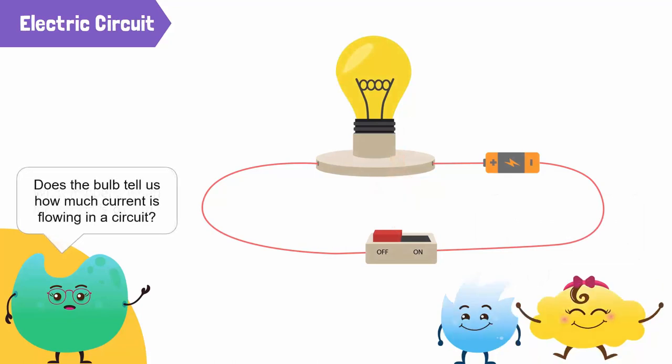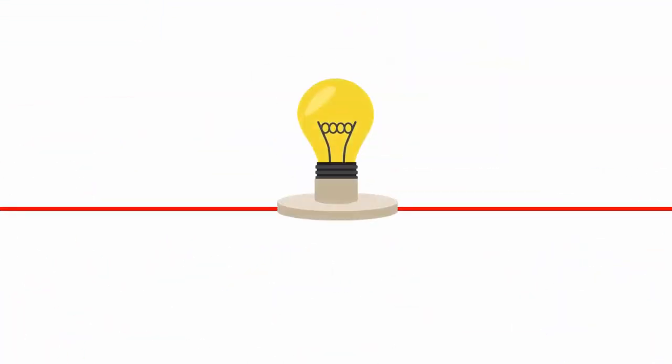But does the bulb tell us how much current is flowing in a circuit? A light bulb tells us that an electric current is flowing in a circuit, but it cannot show how much current is flowing through a circuit.